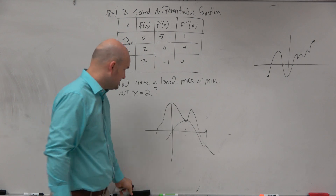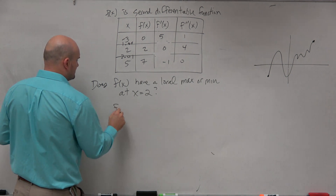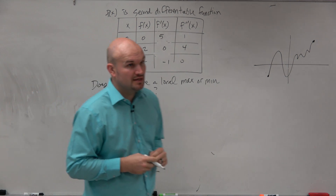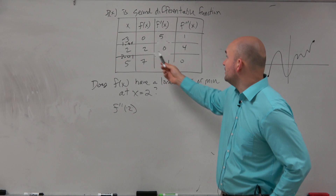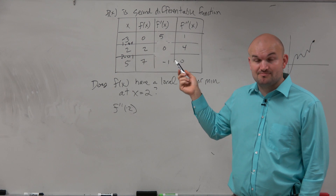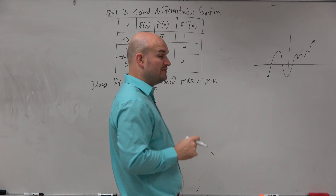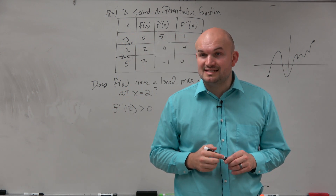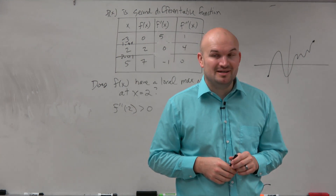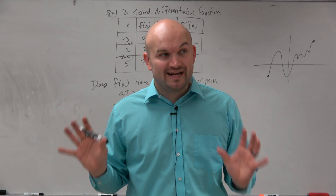So why don't we look at the second derivative test? We're going to look at f double prime of 2. And if we look at f double prime of 2, what do we get? 4 — which means that's positive. So if we have the second derivative as positive, that tells us our graph is going to be concave up. Therefore, it's a minimum, which is the opposite of what we thought by looking at the first derivative test. So that's why you have to be careful with this.